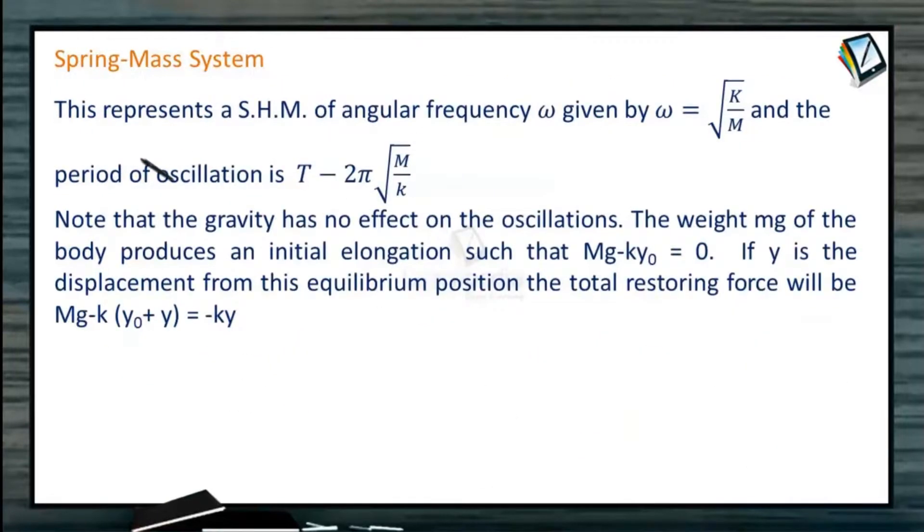We have learnt that in case of SHM of angular frequency omega, omega is given by under root K by M and time period is 2π under root M by K. Now if we talk about vertical oscillation, suppose here is a fixed vertical support and there is one spring attached to the ceiling with a block. The spring was in its natural length somewhere here.